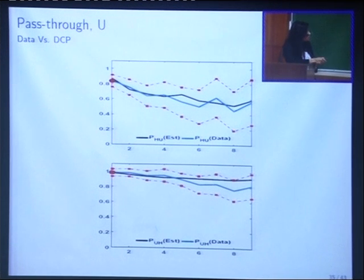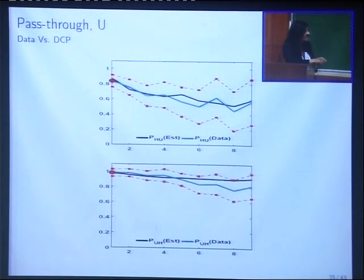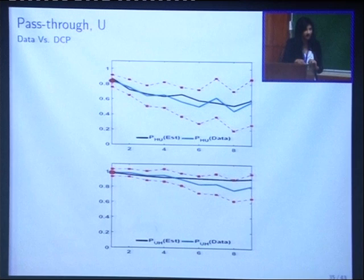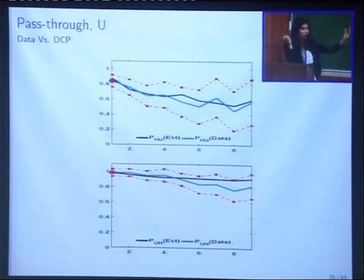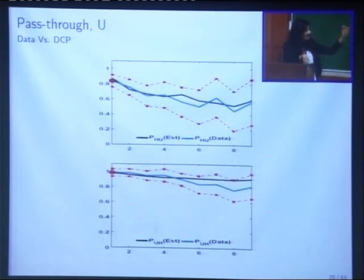When you use the model and try to see what happens in the dominant currency pricing world, that works extremely well — that's the black line. The black line is the dominant currency pricing case. Intuitively, in the extreme, what this is telling you is that if all Colombian imports coming from the U.S. and all Colombian exports going to the U.S. are priced in dollars, then the Colombian peso price is going to move one-to-one with it, which is exactly what that shows.